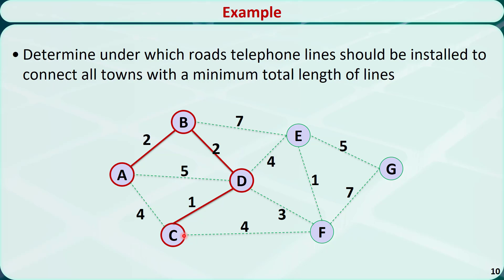Repeating the step: find one unconnected node that is closest to A, B, C, and D. The direct neighbors are E and F. The closest is node F — the distance from F to D is 3. Let's connect D and F.